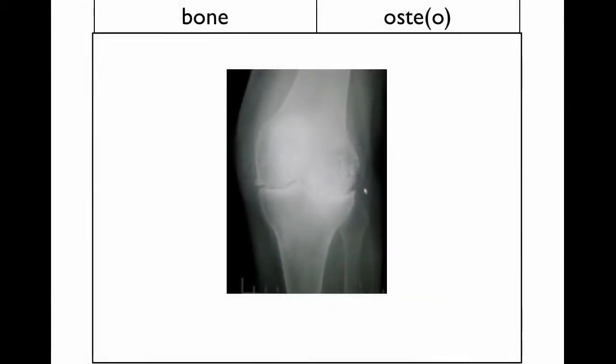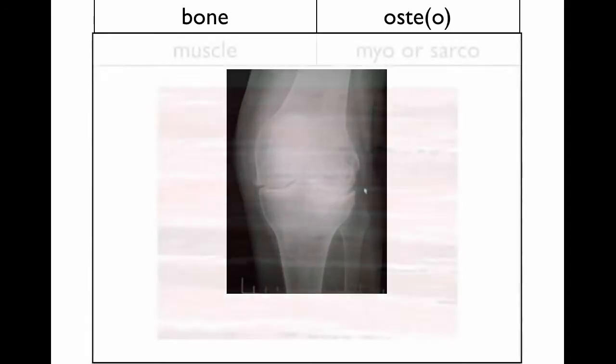Something you'll see every time we talk about bone and the skeletal system is osteo. This slide shows osteoarthritis, and you're going to see osteo somewhere in there. Osteocyte, in fact, is the name of a bone cell.